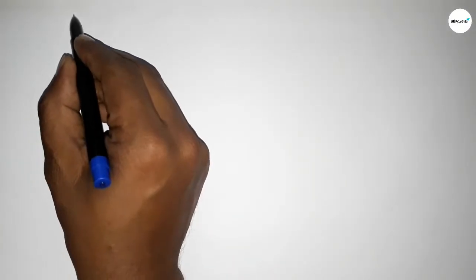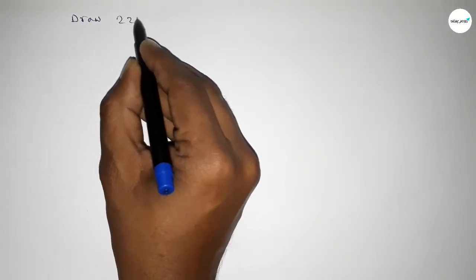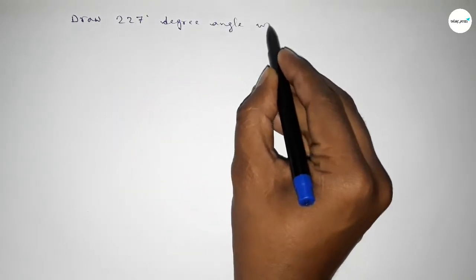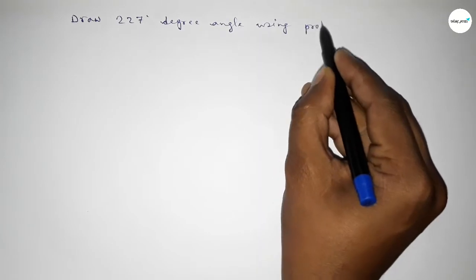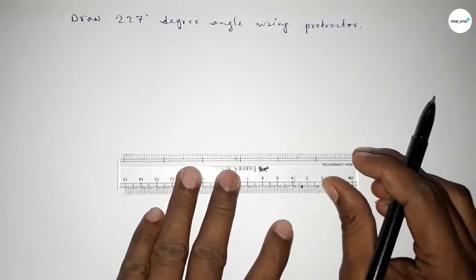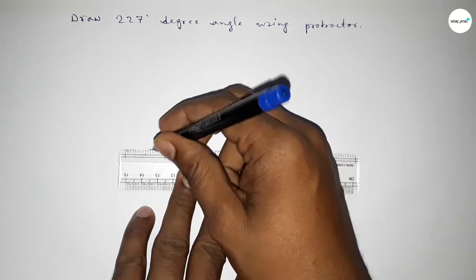Hi everyone, welcome to Essay Share Classes. Today in this video we have to draw a 227 degree angle by using a protractor. So let's start the video. First of all, we have to draw here a straight line of any length.